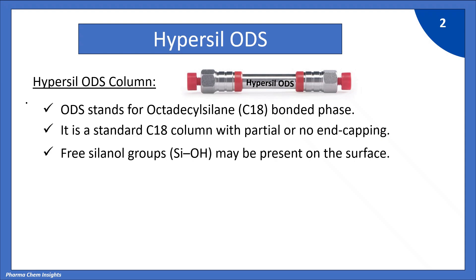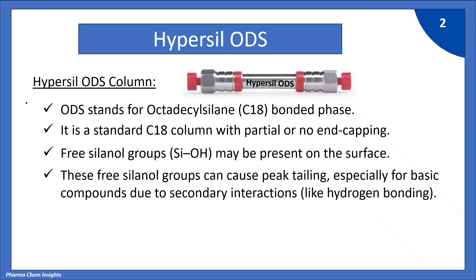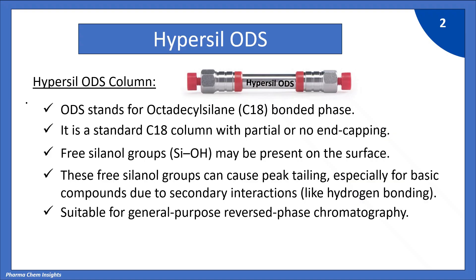Free silanol groups may be present on the surface. These free silanol groups can cause peak tailing, especially for basic compounds, due to secondary interactions like hydrogen bonding. It is suitable for general purpose reverse phase chromatography.